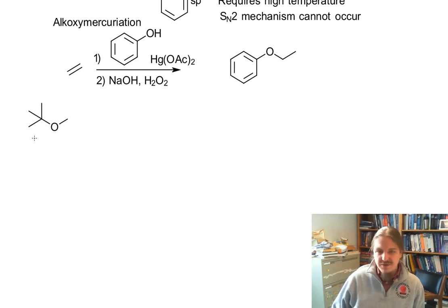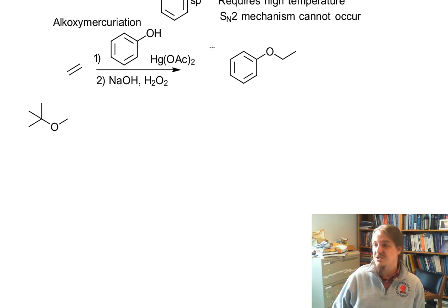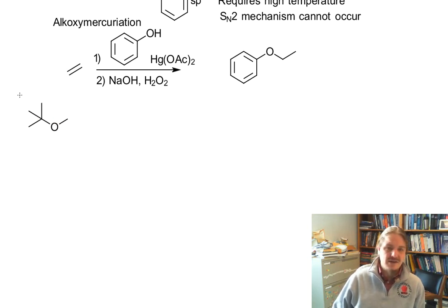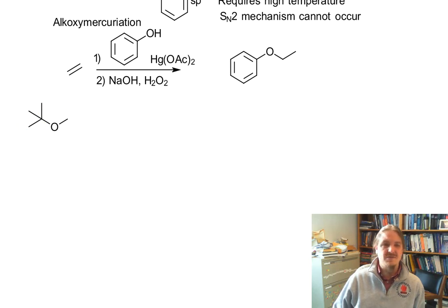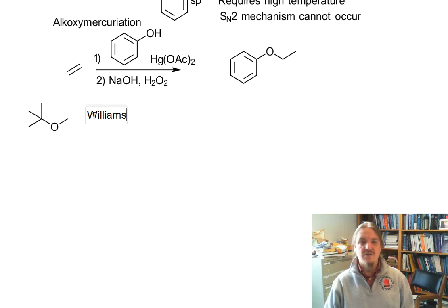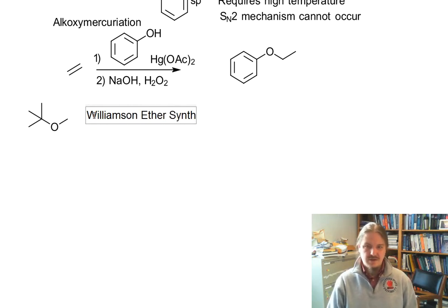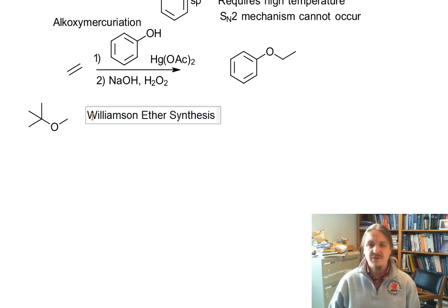Methyl tert-butyl ether is another good example. Like the previous example, we're not even going to talk about the acid-catalyzed reaction — there's a tertiary group, and the compound is not symmetric. So we're going to start right off with the Williamson ether synthesis pathway.